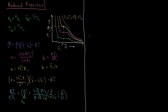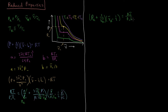Rewriting, we have P_R plus 3 over V̄_R² times (V̄_R minus 1/3) equals RT over P_C·V̄_C. We now need to evaluate this P_C·V̄_C denominator using the A and B parameters.